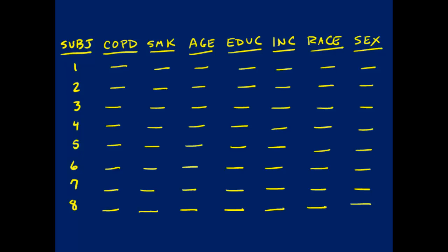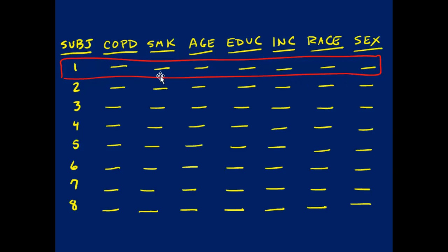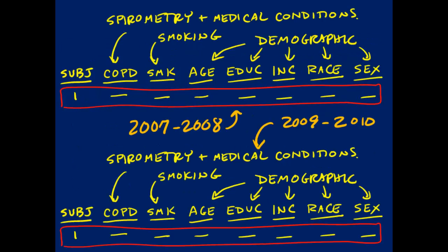The way the data are structured, one row of data represents the data we have for one person in our dataset. We also saw that the data we need are not only in different datasets, so we need to put the data together for one particular person, but we also have data from two different cycles. I'm using the 2007-2008 as well as the 2009-2010 data, so we need to not only connect across an individual, but also stack the data from different cycles of the NHANES survey.